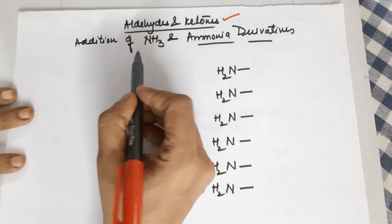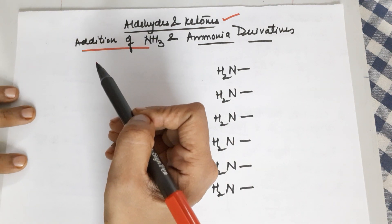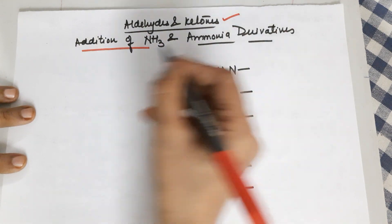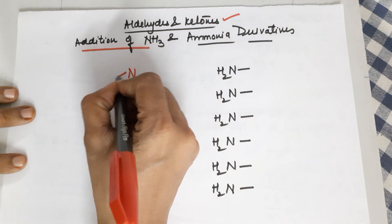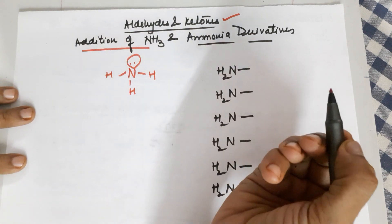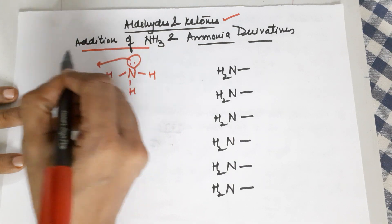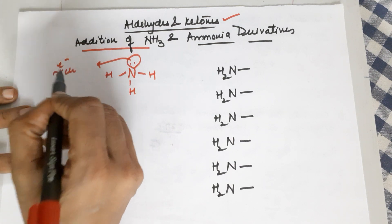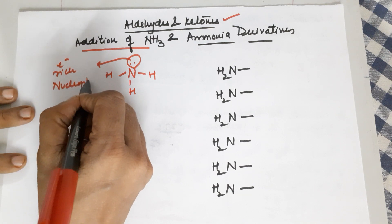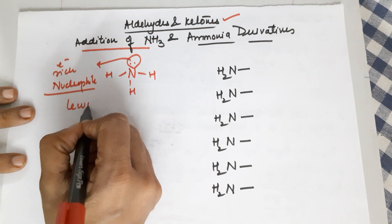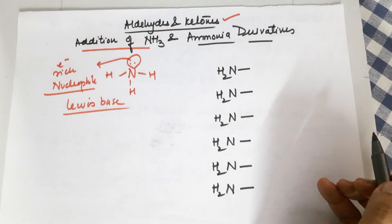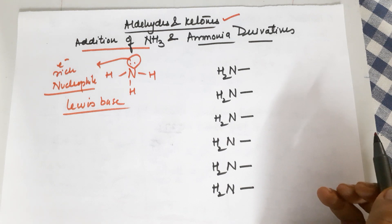The next coming video is about chemical reactions of aldehydes and ketones where I will be adding ammonia and ammonia derivatives. Ammonia is a molecule with a lone pair, and it is because of this lone pair that it is an electron-rich entity — we call it a nucleophile. It is also called a Lewis base.